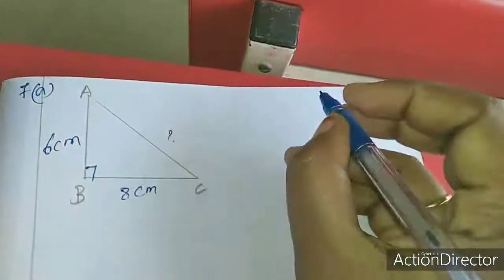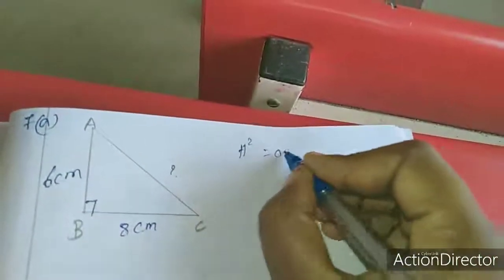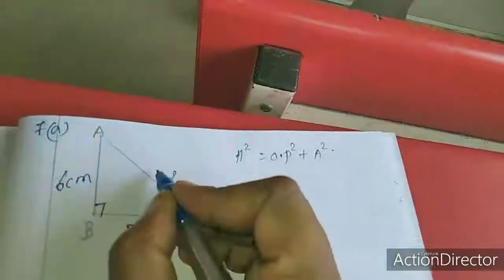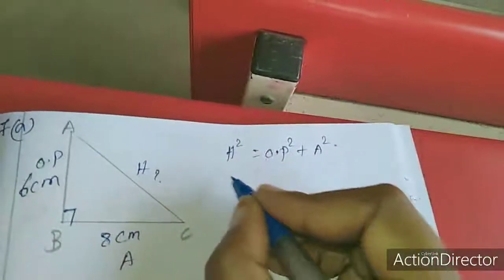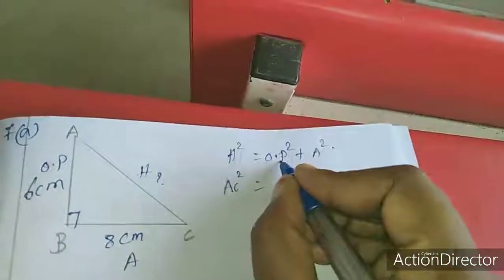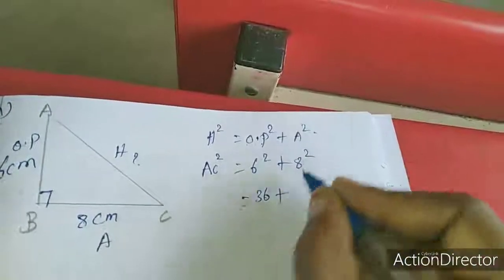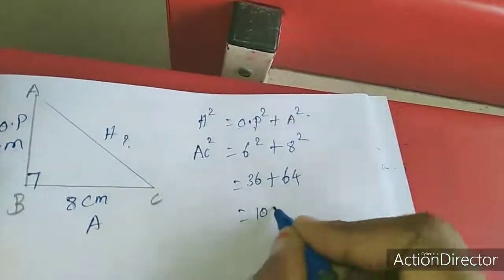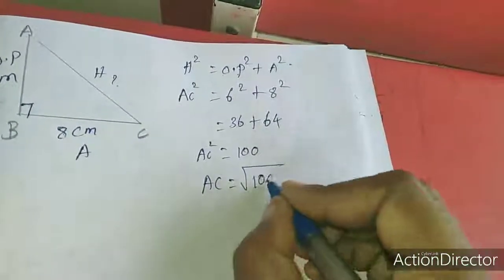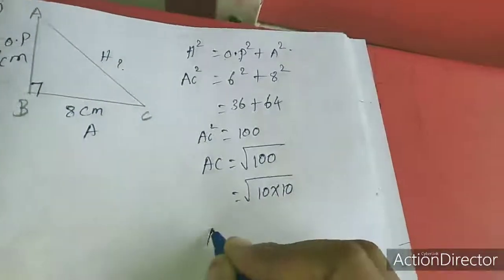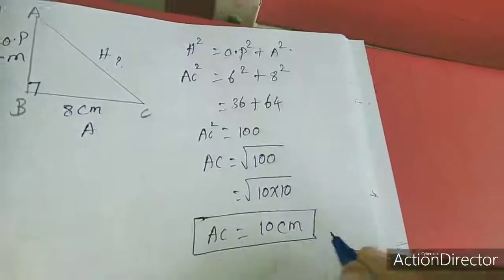In right angle triangle, we know the Pythagorean theorem. That is, hypotenuse squared equal to opposite squared plus adjacent squared. This is the hypotenuse, this is opposite, this is adjacent. So I am applying, hypotenuse only we need. So AC squared equal to, opposite is 6, so 6 squared plus adjacent is 8, 8 squared. So 6 squared is 36 plus 8 squared is 64. If we add, you will get 100. So AC squared equal to 100. We need the AC value, so AC equal to square root of 100. This one we can write in 10 into 10, so AC equal to 10 cm.